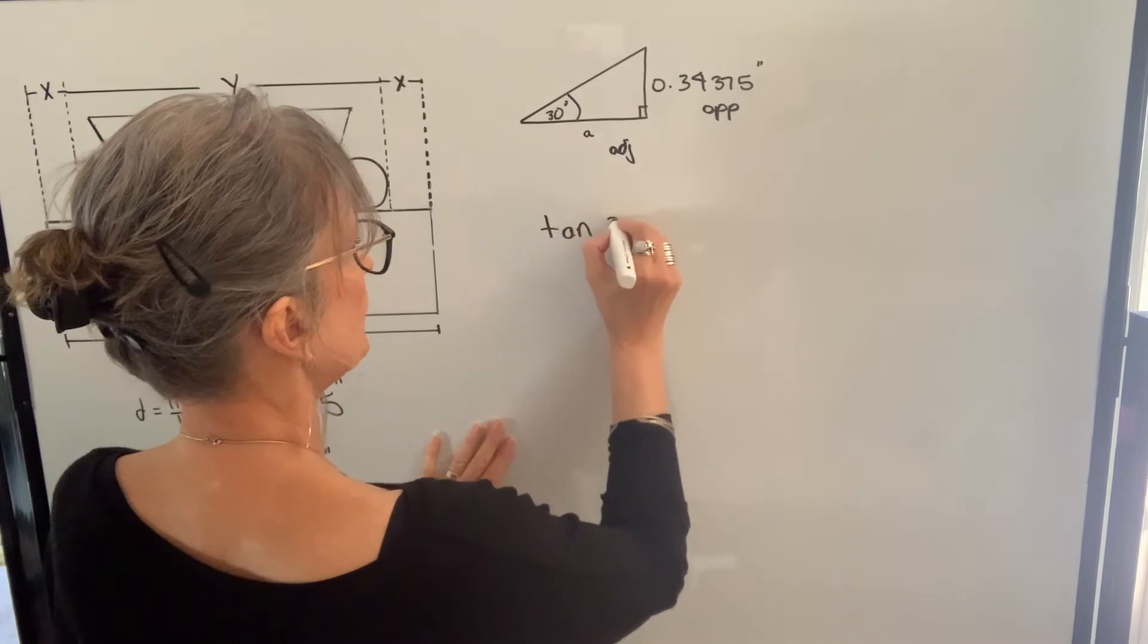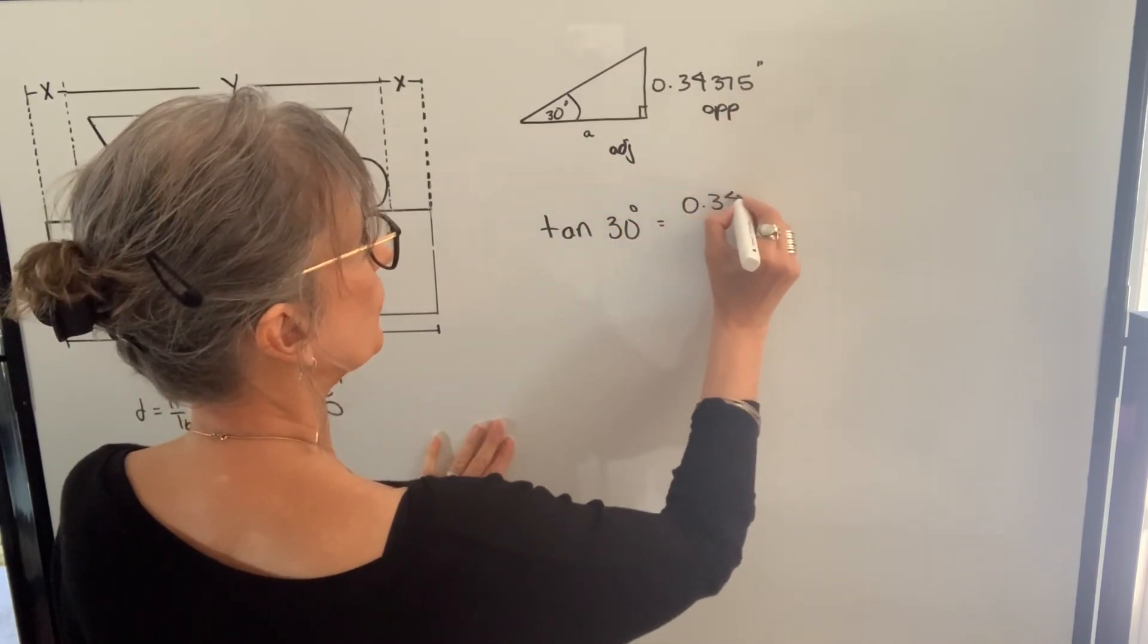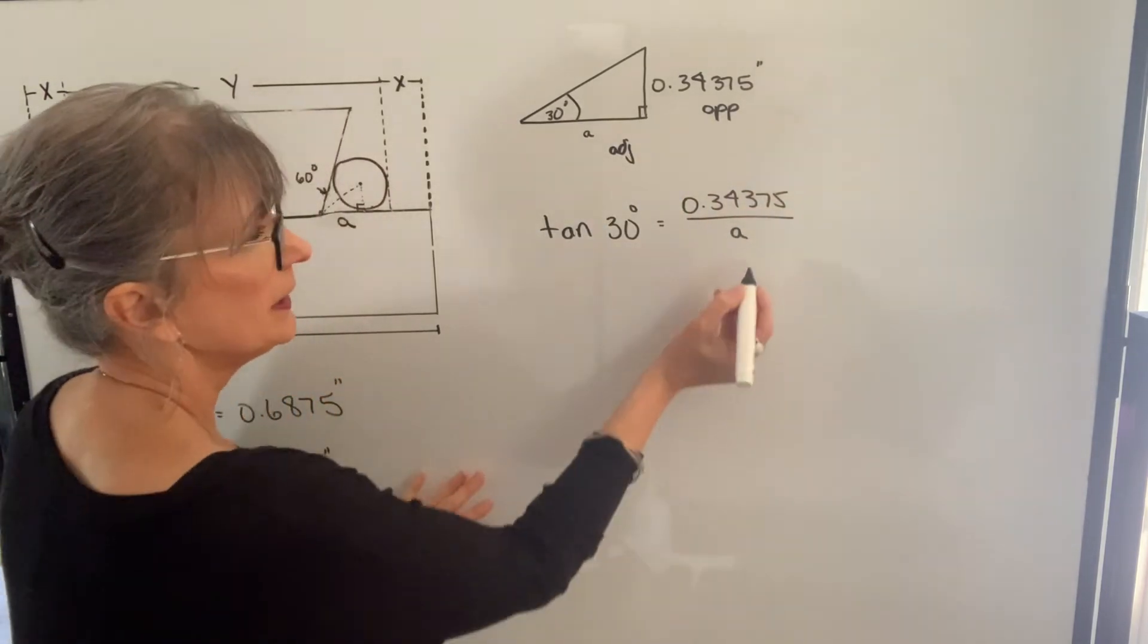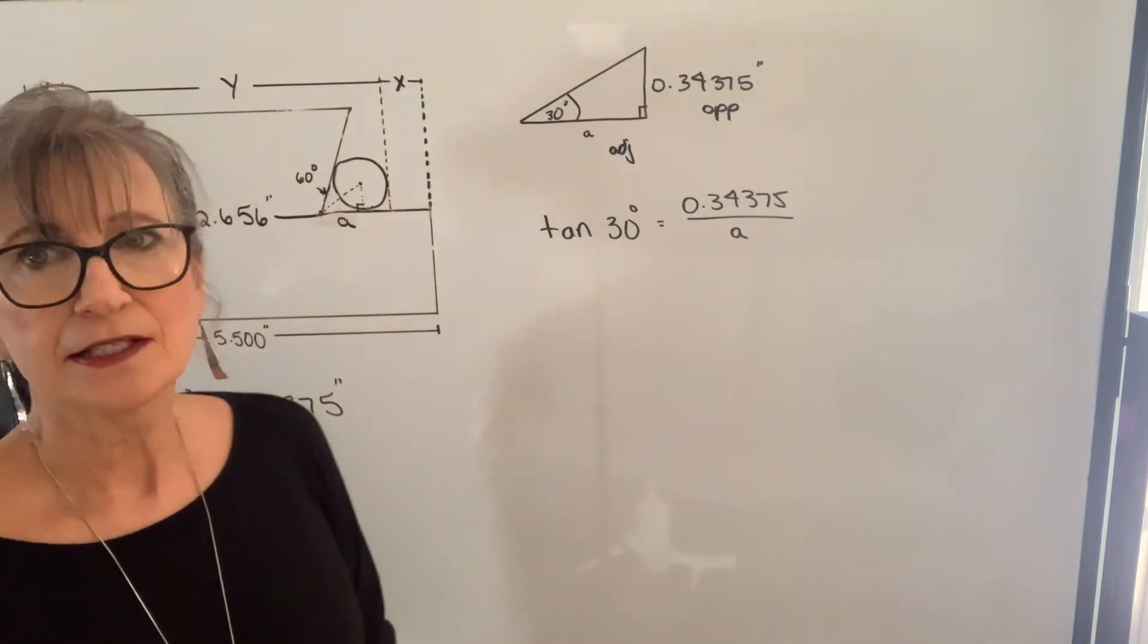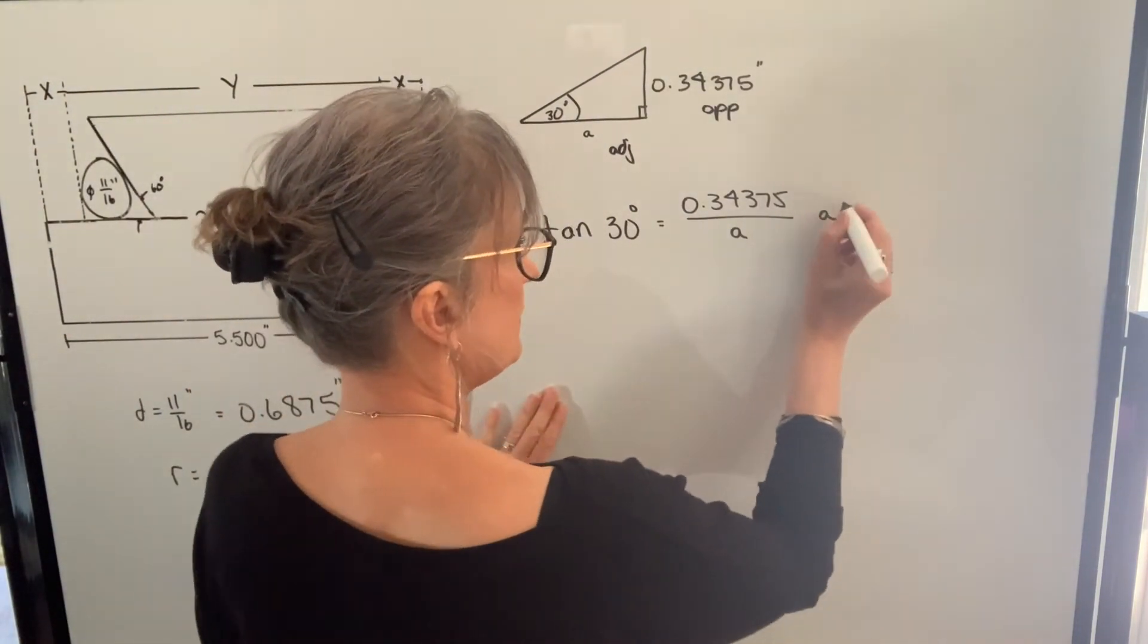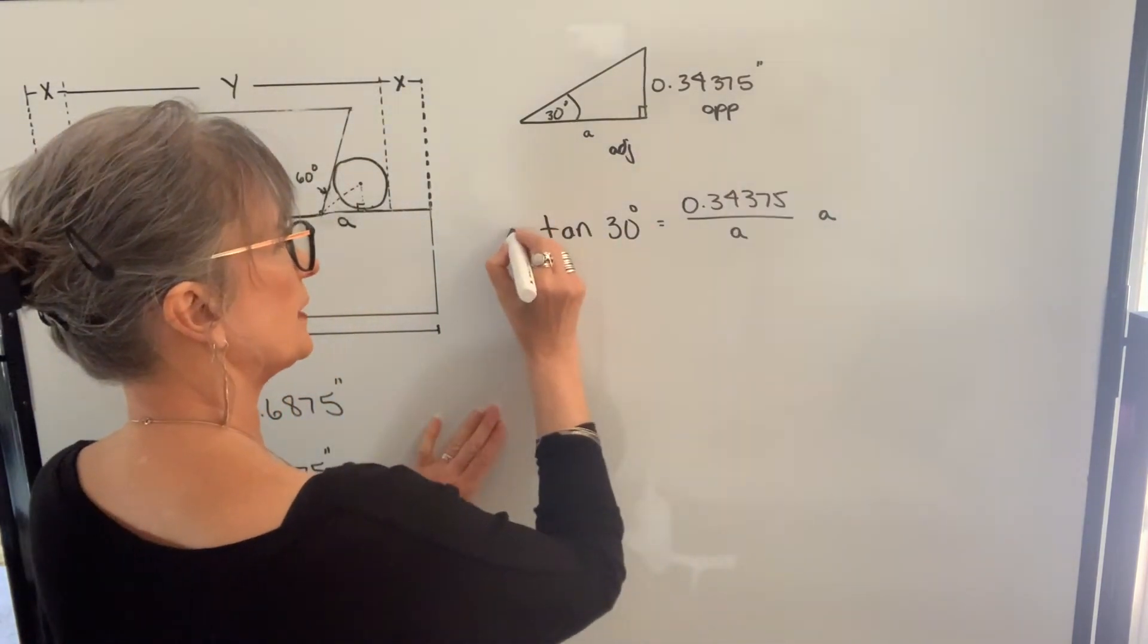So the tangent of 30 degrees will equal the opposite side, which is 0.34375, divided by the adjacent side, which is A. In order to solve for A, I need to get it out of the denominator. So what I'm going to do is I'm going to multiply this side by A, so it will cancel. And whatever I do to one side of the equation, I have to do the same thing to the other side.